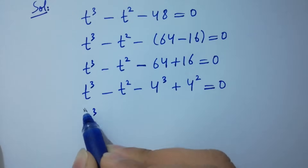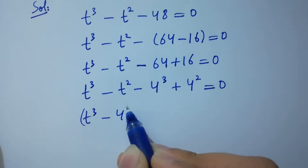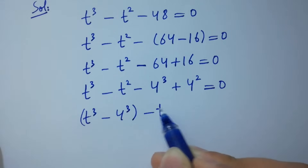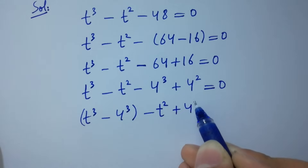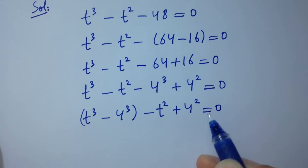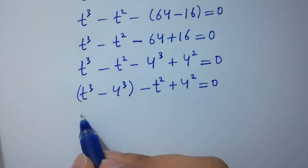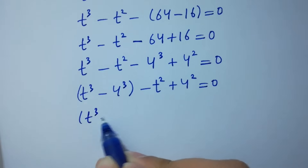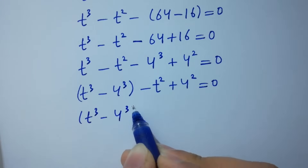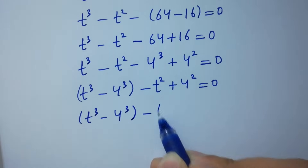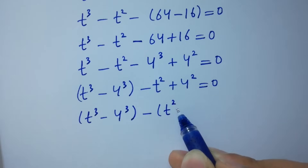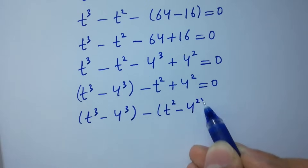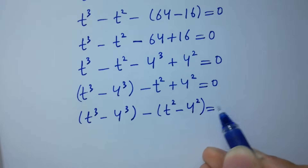So we rewrite as t cubed minus 4 cubed minus t squared plus 4 squared equals zero. Factoring out the common terms: t cubed minus 4 cubed, then minus common t squared, giving minus t squared plus 4 squared equals zero.